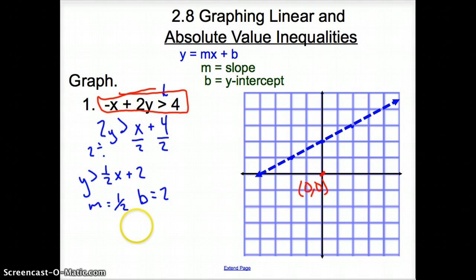A 0 for my x and a 0 for my y. So, I'm going to plug that in right here. So, now I have negative 0 plus 2 times 0 is greater than 4. So, we have 0 is greater than 4. Now, you have to ask yourself, is 0 greater than 4? No, it is not. So, that makes this side false.